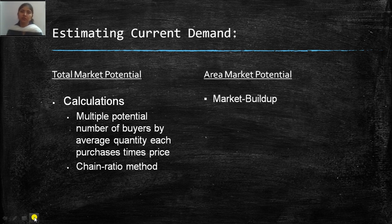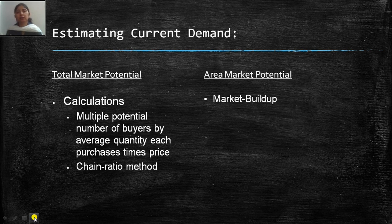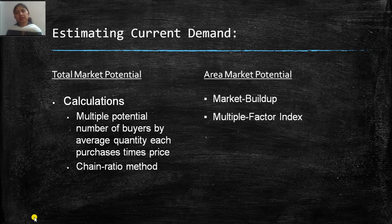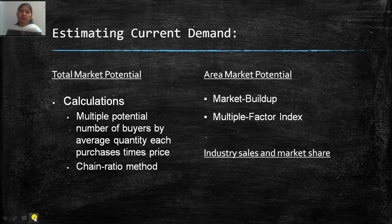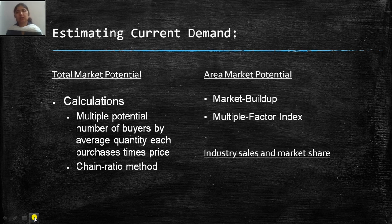Then comes area market potential. Identify a specific territory to identify potential buyers using two methods. First, market buildup: identify a territory, city, state, or nation, then identify potential customers and the quantity purchased along with price. Second, multiple factor index: give weightage to each criteria customers consider before purchasing. Third is industry sales and market share: identify products consumers bought from competitors and your company to identify current demand at the industry level.